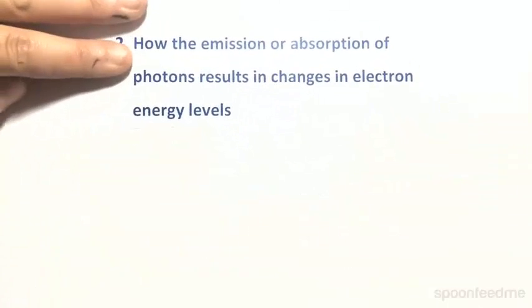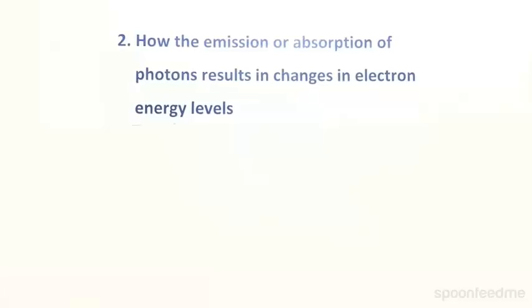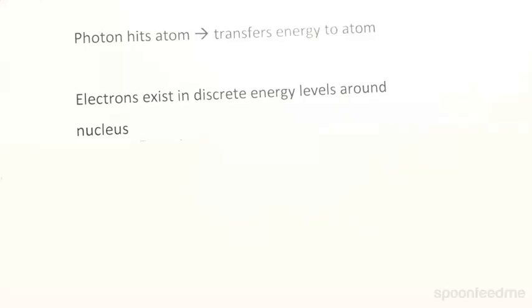This brings us to our next point. How does the emission or absorption of these photons result in changes in electron energy levels? A photon is pretty much just a bundle of energy. When a photon hits an atom, it transfers its energy to the atom. We know the basic structure of an atom, a nucleus surrounded by electrons. These electrons actually exist in discrete energy levels around the nucleus.